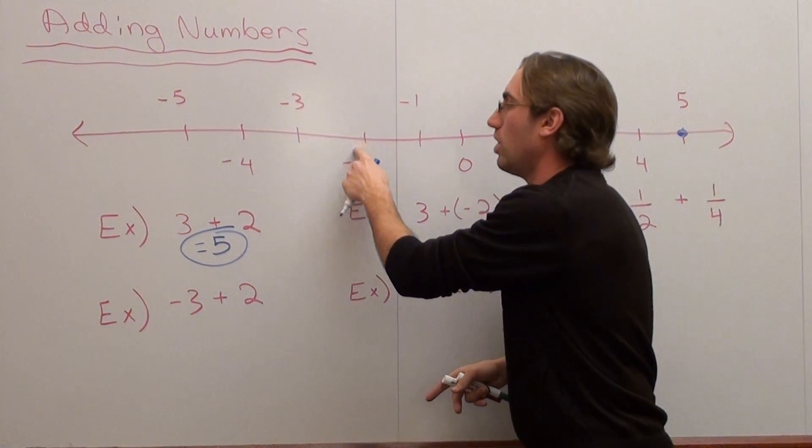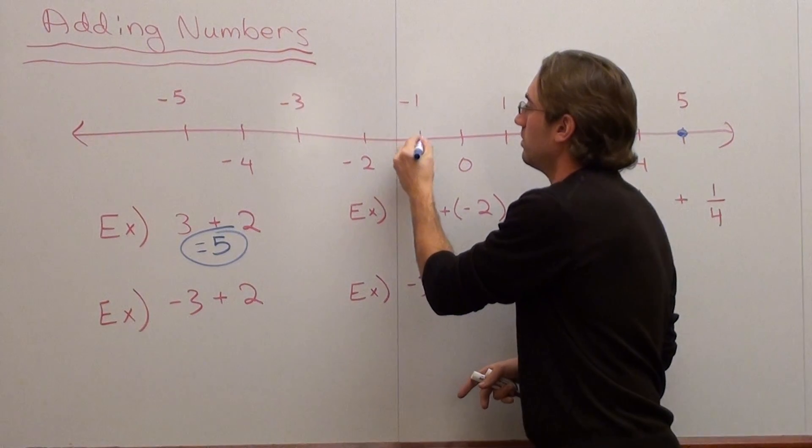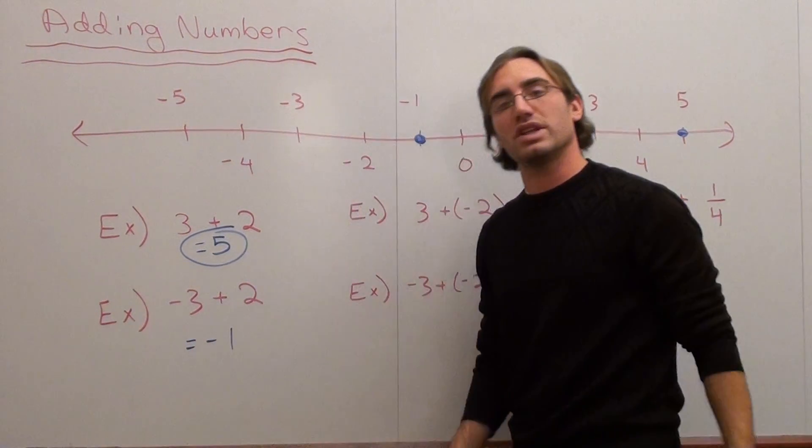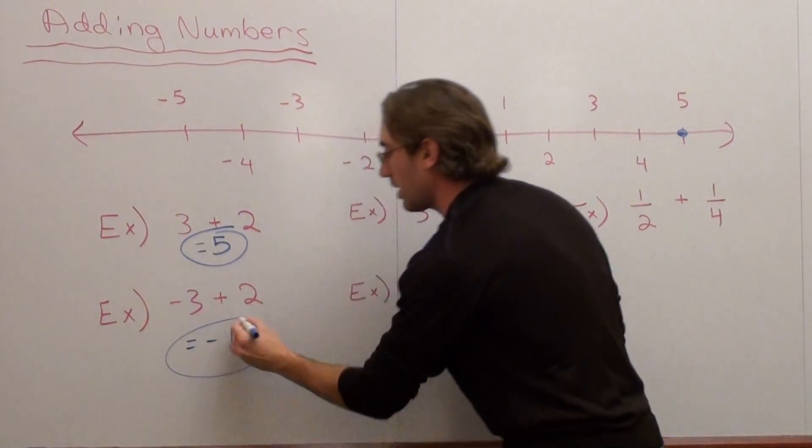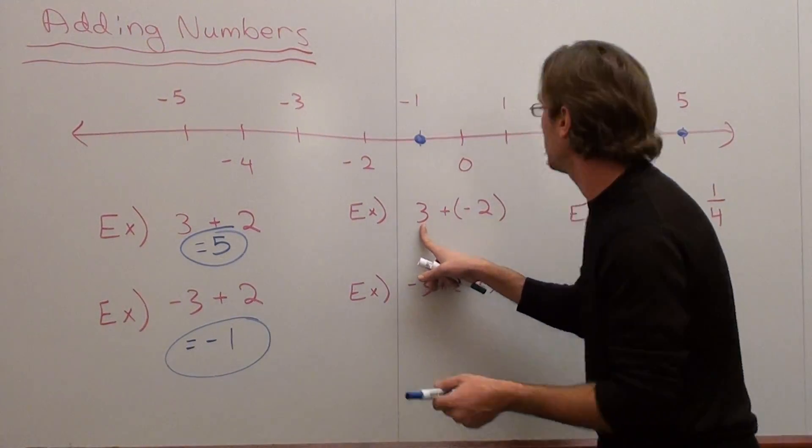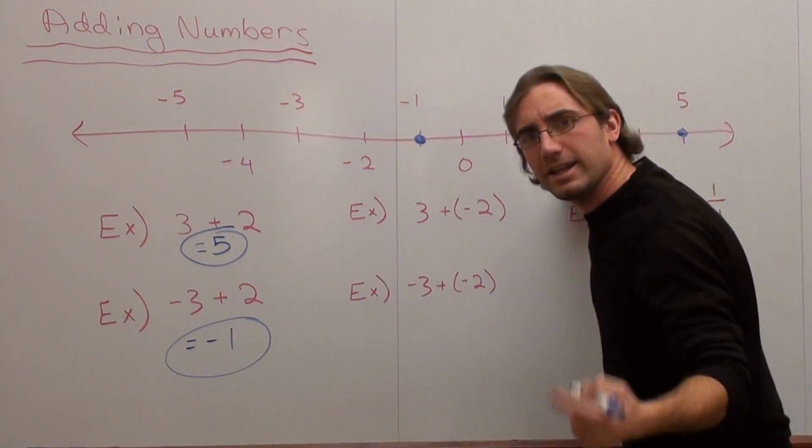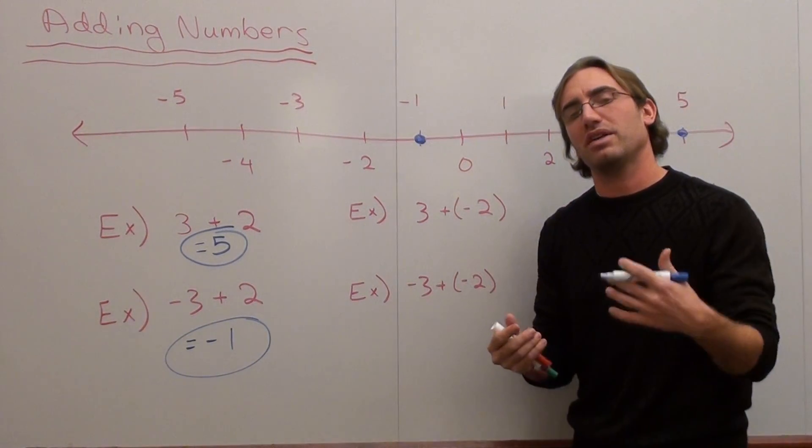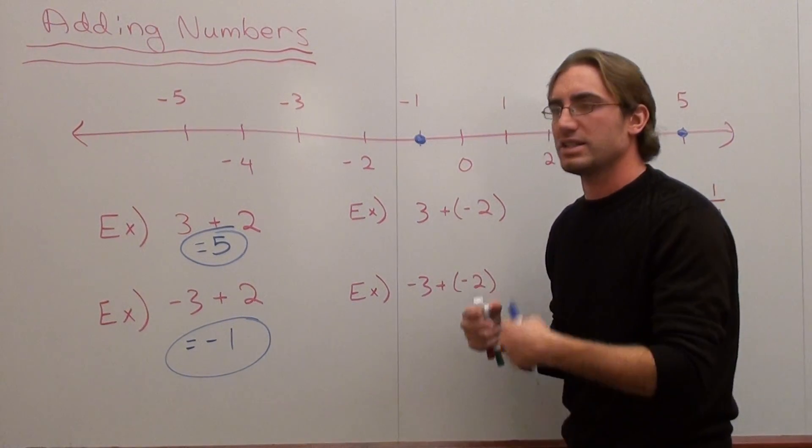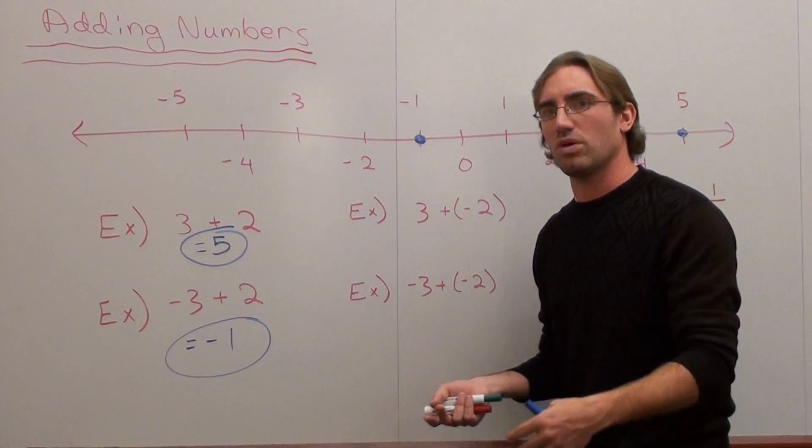So you're adding 1, 2, and your answer is negative 1. Continuing along, this time we're going to start at 3 and we're going to add negative 2. The best example I ever got of adding negative numbers that made sense is: if you're going to add cold, is the temperature going to get colder or warmer?